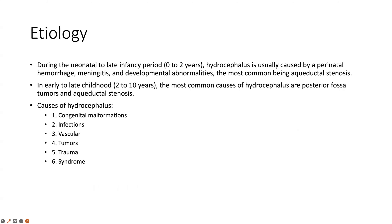Causes of hydrocephalus differ by age group. Below two years, hemorrhage and meningitis are most common alongside congenital malformations, with aqueductal stenosis being the most common anomaly. In early to late childhood (two to ten years), posterior fossa tumors and mild aqueductal stenosis presenting later are the most common causes. Etiologically, hydrocephalus is classified as malformations, infections, vascular causes, tumors, trauma, and associated syndromes.